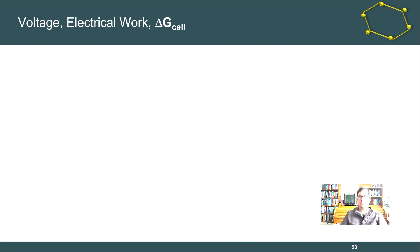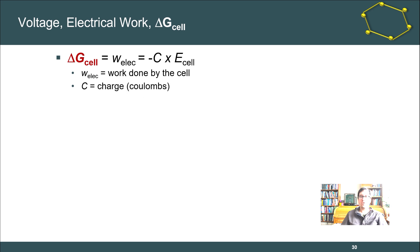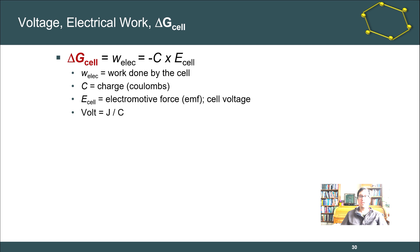Let's look at electrochemical or electrical work. The Gibbs energy of a cell equals the potential electrical work, which equals the negative charge in coulombs times the cell potential. The electric work here is the work done by the cell on the system — our system is the cell doing work on its surroundings, like a battery discharging into a phone. C is the charge in coulombs, E is the electromotive force or cell potential. Since a volt is one joule per coulomb, the Gibbs energy or work must be in units of joules.